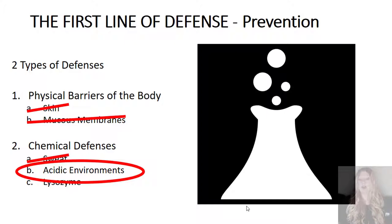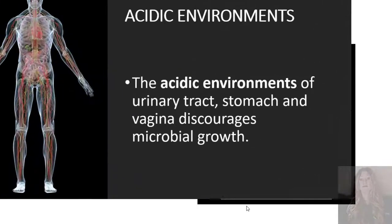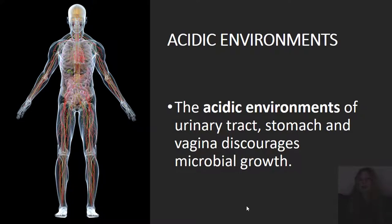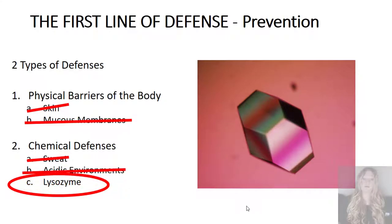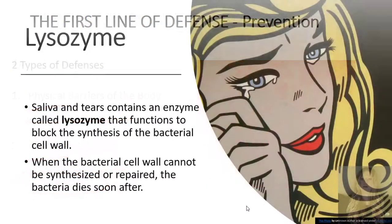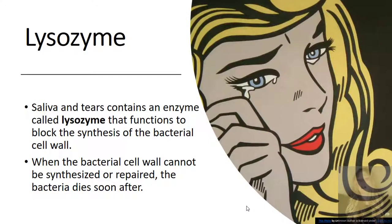We also have highly acidic environments. For example, the acidic environments of the urinary tract, stomach, and vagina discourage microbial growth. Lastly, we'll discuss lysozyme. Saliva and tears contain an enzyme called lysozyme that functions to block the synthesis of the bacterial cell wall. When the bacterial cell wall cannot be synthesized or repaired, the bacteria dies soon after.